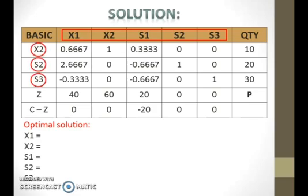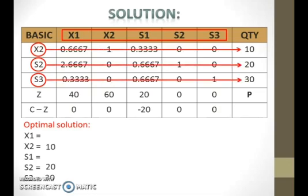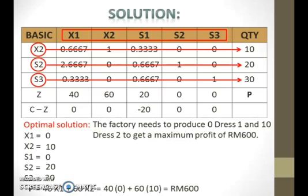Look at the variables in the basic column and read their corresponding value in the quantity column. The variables that are not in the basic column have values equal to 0. Next, calculate the total profit by substituting the value of x1 and x2 into the objective function. The optimal solution indicates that the factory needs to produce 0 dress 1 and 10 dress 2 to get a maximum profit of 600 ringgit.